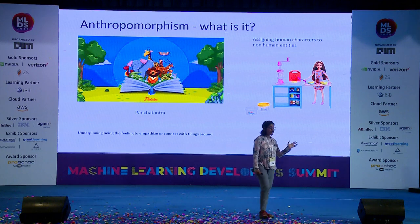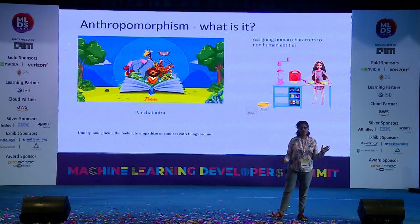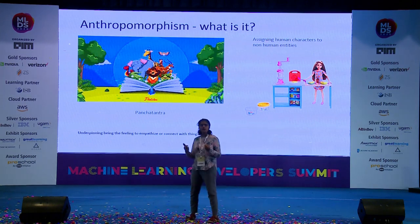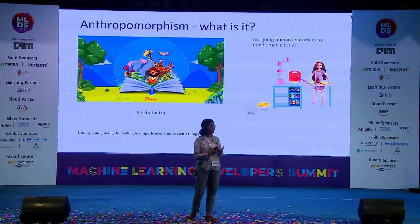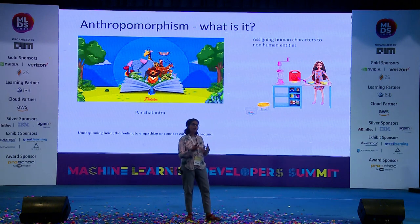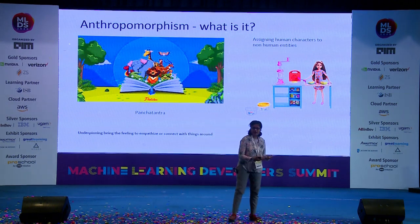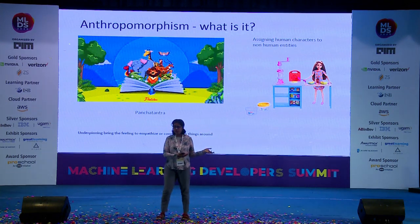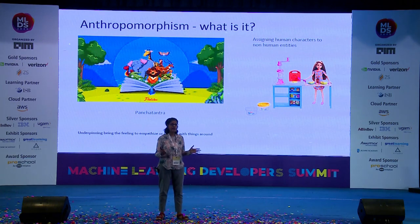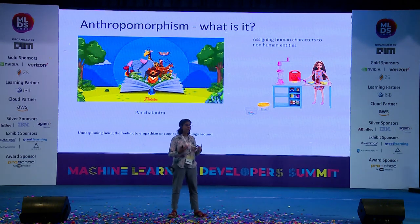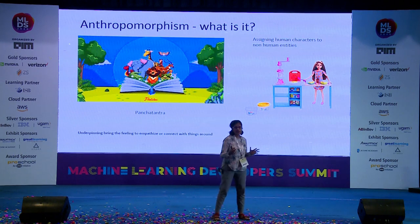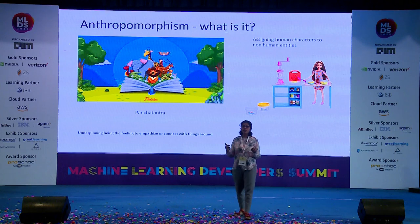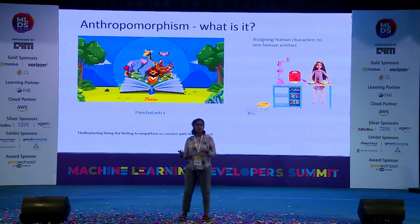This is called anthropomorphism. It's nothing new — it's an age-old, intuitive thing for human beings to connect with inanimate or non-human objects. It could be your dog, your cat, a chair, or even the projector here. How do you connect with them? One big technique developed over millions of years is anthropomorphism — trying to create a human-like character for a non-human object.